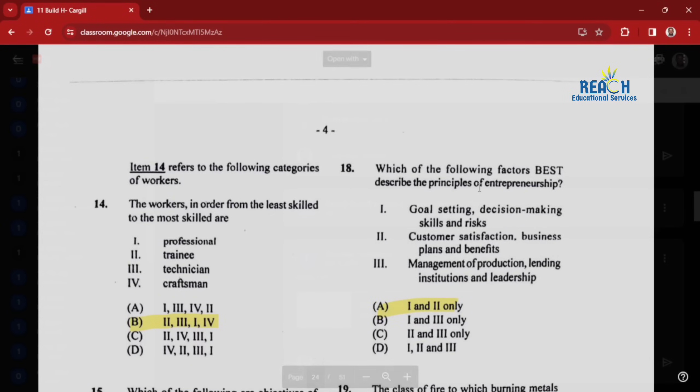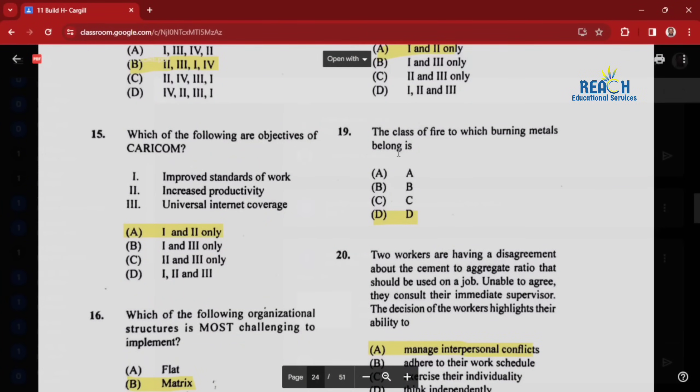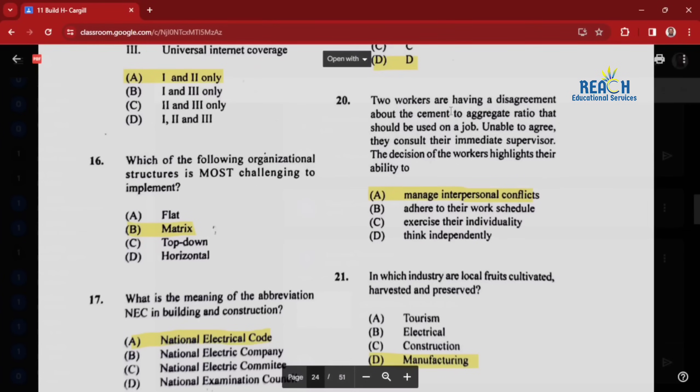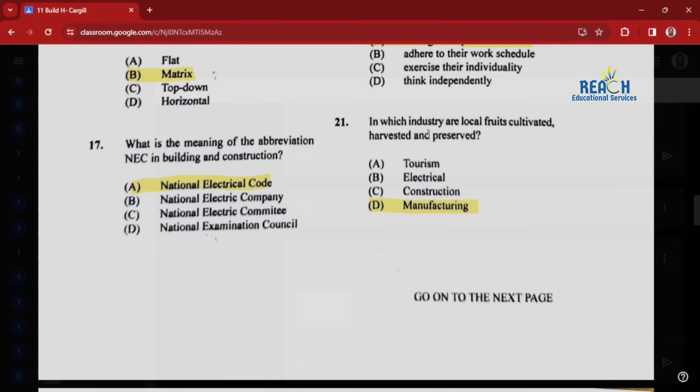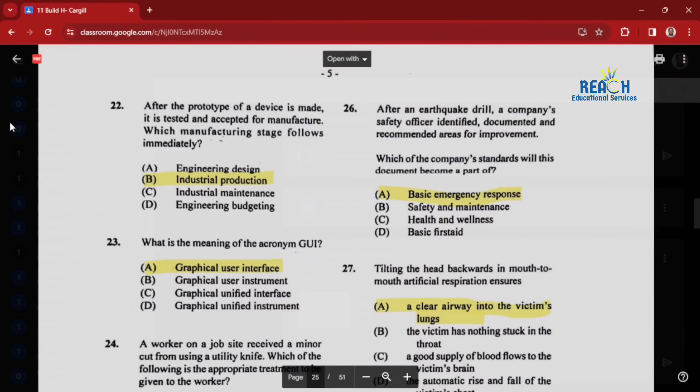Question eighteen: which factors best describe the principles of entrepreneurship? Goal setting, decision making skills, and risk, customer satisfaction, business plans - I would say one and two. Question nineteen: the class of fires to which burning metals belong is Class D. Question twenty: two workers are having a disagreement about the cement aggregate ratio. Unable to agree, they consult their immediate supervisor. The decision of the workers highlights their ability to manage interpersonal conflicts. Question twenty-one: which industry are local fruits cultivated, harvested, and preserved? This would be manufacturing. Question twenty-two: after the prototype of a device is made, it is tested and accepted for manufacture. Which manufacturing stage follows immediately? That would be industrial production.